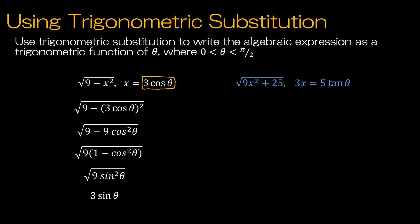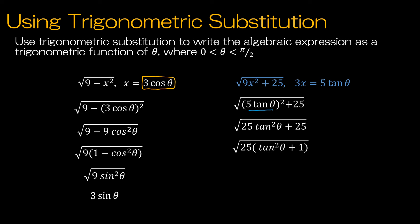For the second trigonometric substitution, the expression is the square root of (9x squared plus 25), replacing 3x with 5 tangent theta. Substituting and squaring gives 25 tangent squared theta, so the expression becomes the square root of 25(tangent squared theta plus 1). Factoring out 25 and replacing tangent squared theta plus 1 with secant squared theta using the Pythagorean identity, taking the square root gives a final answer of 5 secant theta.